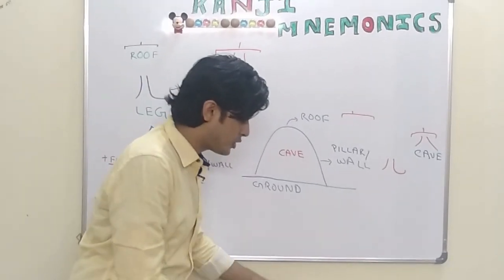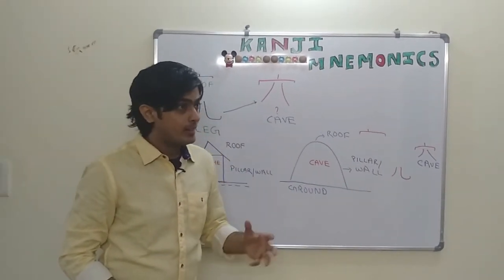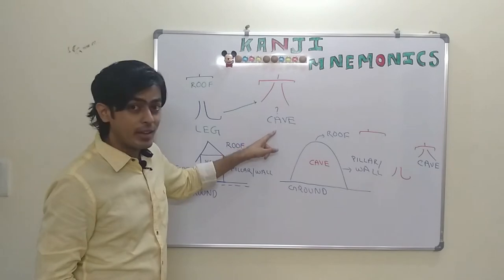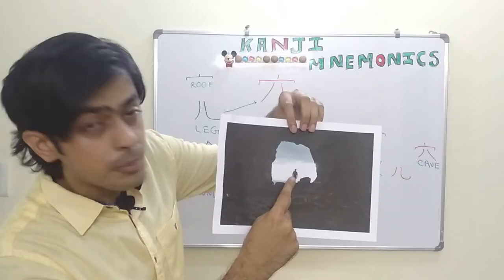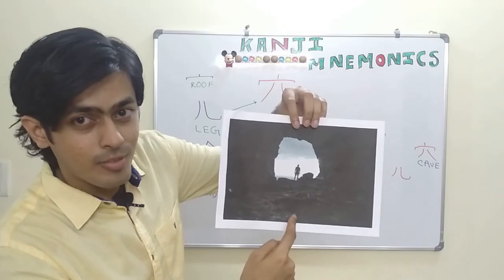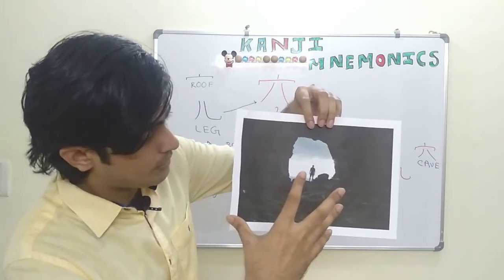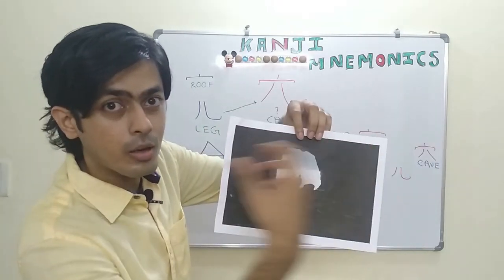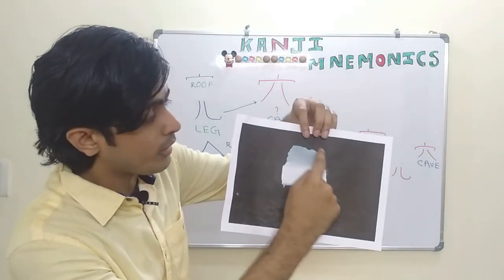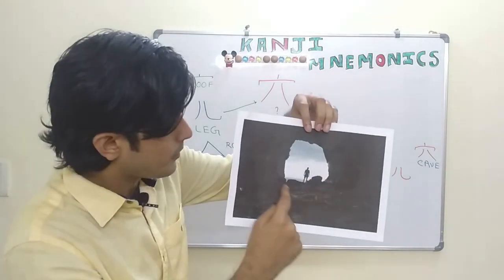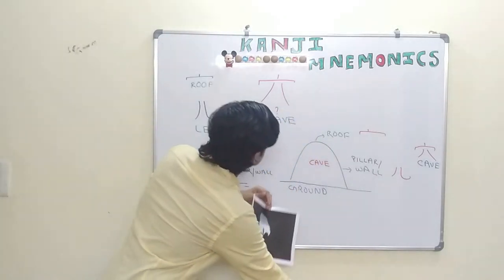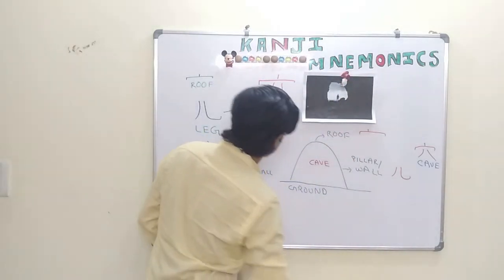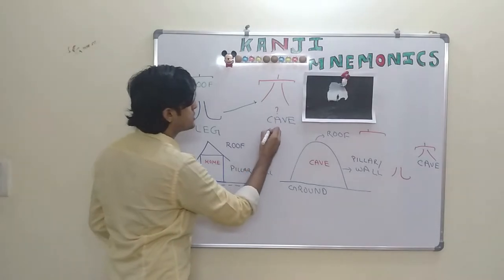Now I will show you a picture in order to further strengthen this particular mnemonic technique and also to associate another meaning of this kanji. This man is inside a cave and this picture is taken from inside the cave. Now as you visualize this particular portion which is opening to the outside world, this gives an image of a hole, right?